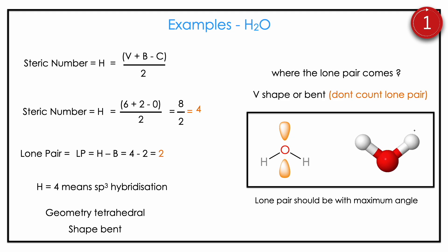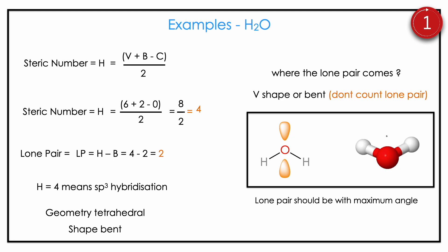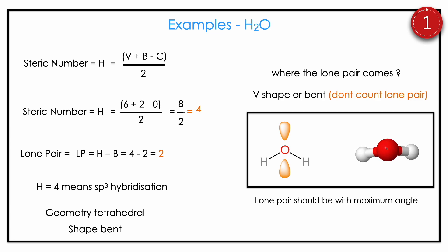Then water, H2O. Oxygen valence is 6, bonded atoms are 2. H = (6 + 2 − 0) / 2 = 8 / 2 = 4. Steric number is 4. Lone pair = 4 − 2 = 2. Steric number 4 gives a tetrahedral geometry, but because two lone pairs are not visible and are far apart from each other, the real shape is a bend shape — oxygen holding the two hydrogens at an angle. So geometry is tetrahedral and shape is bent.